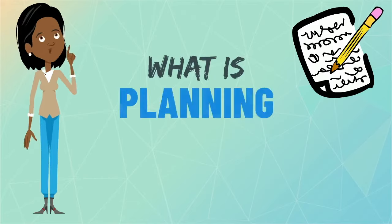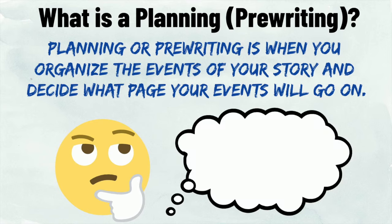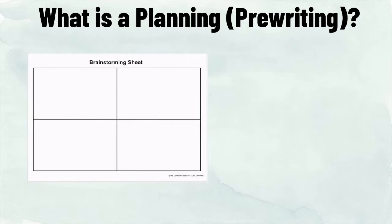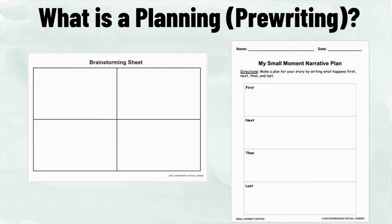What is planning in writing? Planning or pre-writing is when you organize the events of your story and decide what page your events will go on. Some writers may use graphic organizers, while others may use outlines.